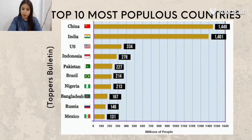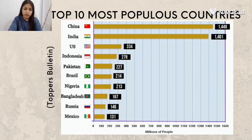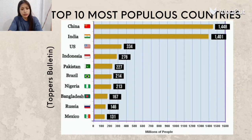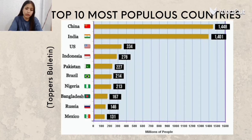This is the top most populous countries in the world in 2022 according to Tappers Bulletin. China is the most crowded country with about 1.4 billion citizens. Second is India and third is the US. In China, over 60% of its residents live in urban centers. The estimated world population is 7.8 billion as of 2022.